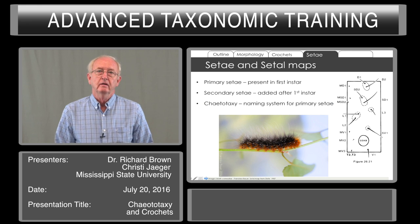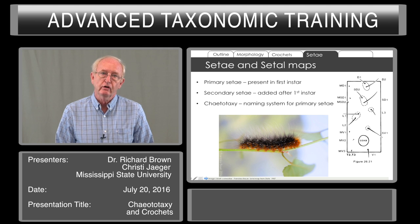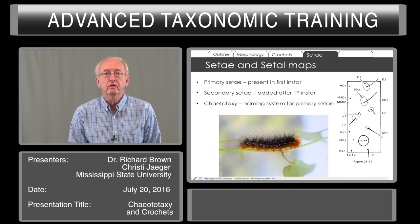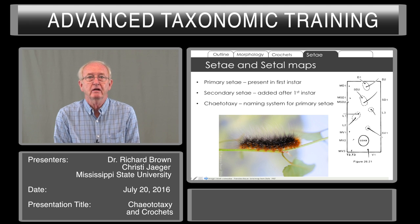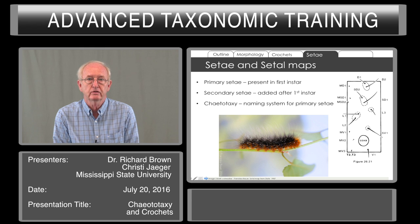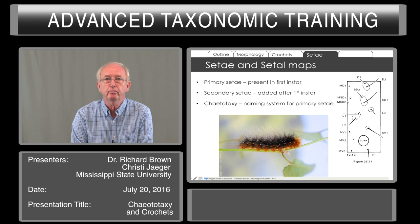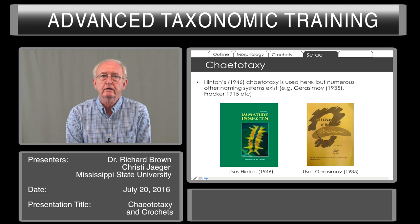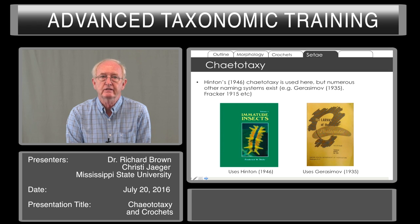Seta can be primary or secondary. In all larvae, the seta that are present in the first instar are the primary seta. In some caterpillars, in various families, additional seta can be added after the first instar, and with each molt additional seta can be named. Even with the secondary seta present, the primary seta are still there but cannot be individually identified in the later instars. Ketotaxy is the naming system used for the primary seta. The ketotaxy we use follows the terminology of Hinton. However, if you look at some references before 1950, there are other naming systems that exist, and in some books such as the Stehr volume on immature insects, the various systems are compared.